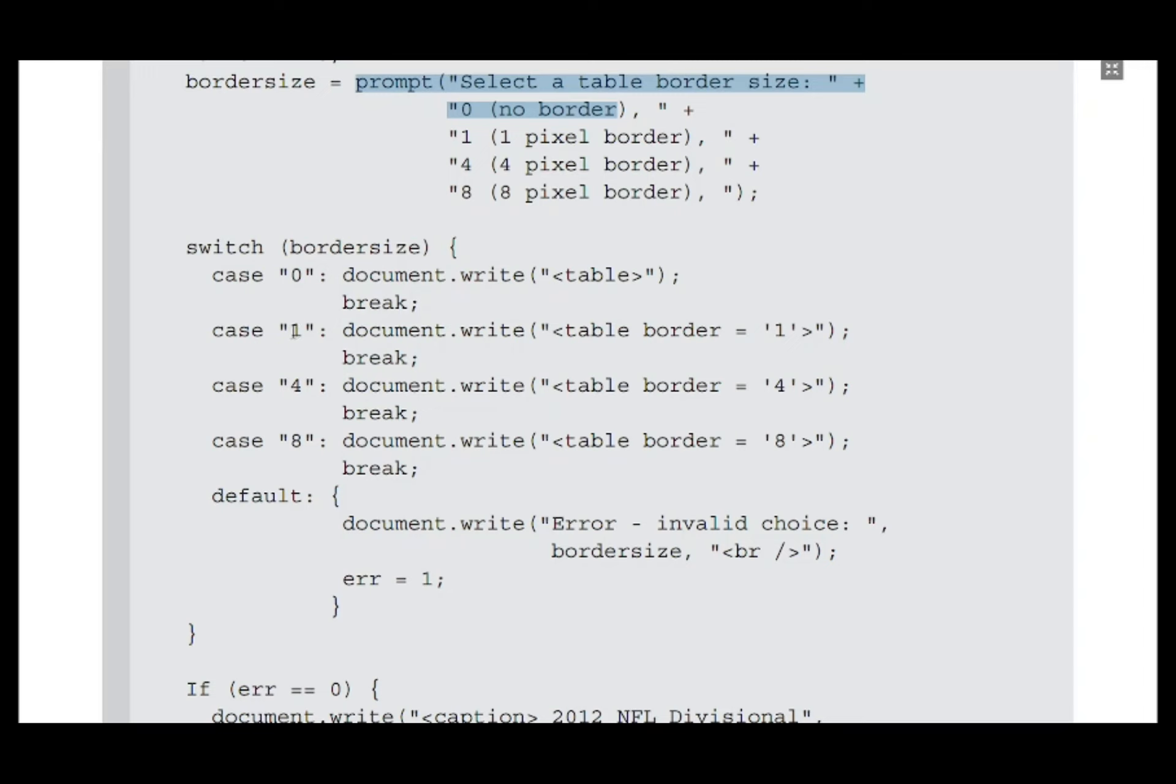If user has entered the value one, we will create a table tag with the border attribute set as one. Correspondingly for four and eight, similar value setting happens. Each case is delimited by a break, so only a single operation is done.